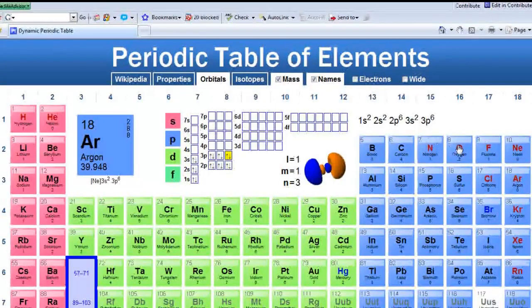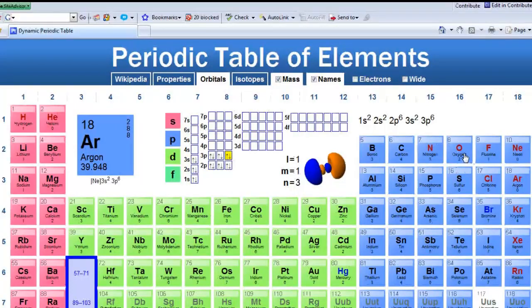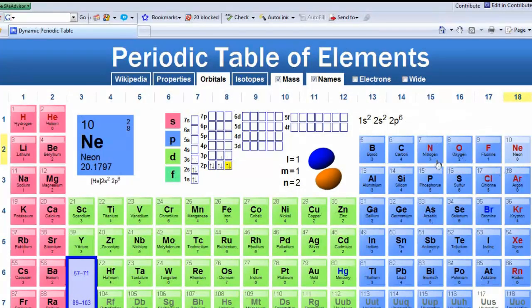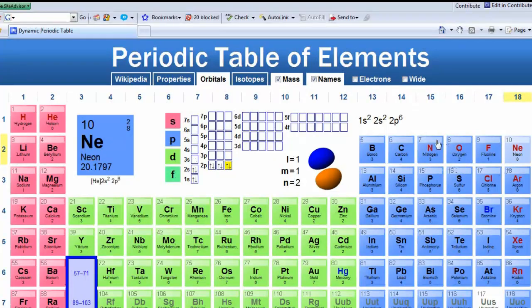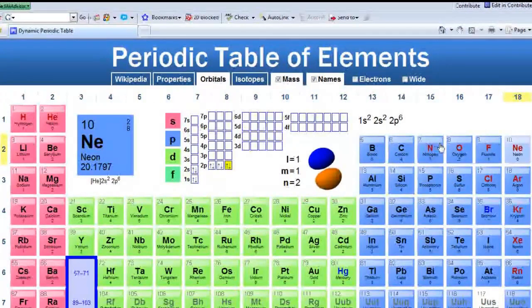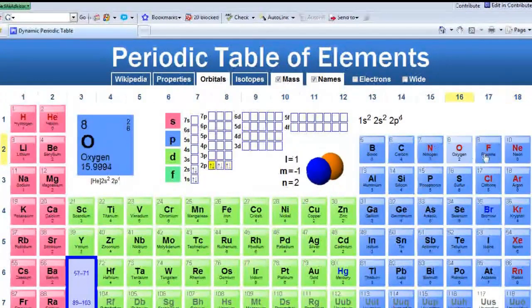Group six, main group six atoms tend to form negative two anions because they're one, two away from the noble gases. Nitrogen and phosphorus in group five tend to form negative three anions because they're one, two, three away.